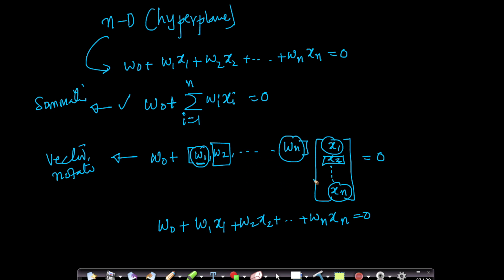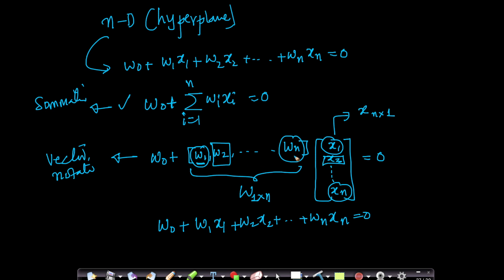Immediately after this section, we will understand what a dot product is and write this in a much more concise form using vector notation. Since w can be thought of as a vector with one row and n columns, and x as a vector with n rows and one column, we can multiply a 1×n matrix by an n×1 matrix to get a 1×1 result — a simple row vector times column vector multiplication. This is how we represent a hyperplane.